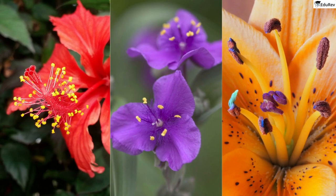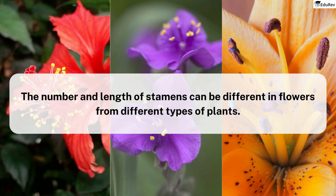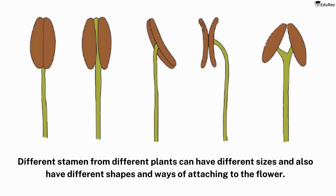The number and length of stamens can be different in flowers from different types of plants. If you were to take a single stamen from 10 different flowers and put them on a slide, you'd see that they can be different sizes. If you looked at each stamen carefully under a microscope and drew pictures of them, you'd see that they also have different shapes and ways of attaching to the flower.